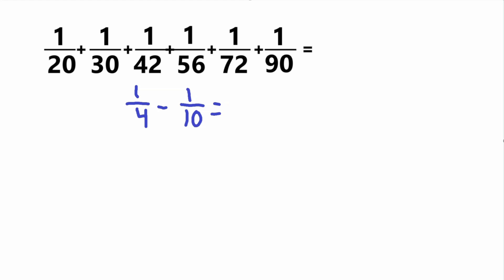So how do we get from 4 to 20? You multiply by 5. So remember, whatever you do to the numerator, you have to do to the denominator, since 5 over 5 is equal to 1, you're basically just multiplying by 1. And then here, 1 over 10, to get the 10 to 20, you have to multiply by 2 over 2, because 10 times 2 equals 20. So that will give us 5 over 20 minus 2 over 20.